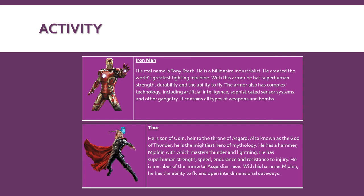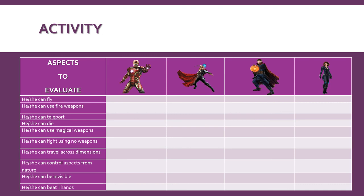Here's the first part of the activity — remember you have to read the four descriptions of the four superheroes and then complete the chart. Here is the chart that you have to complete using can or cannot according to the abilities of each superhero. Take care and stay safe, bye.